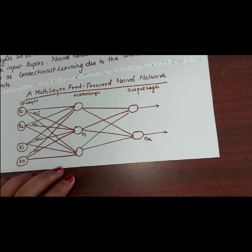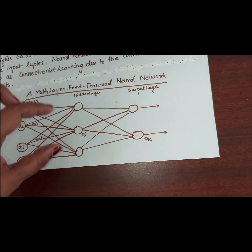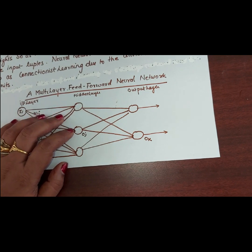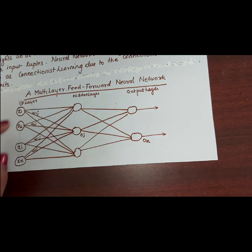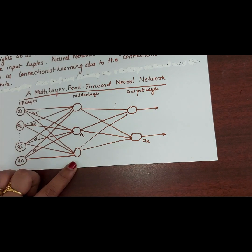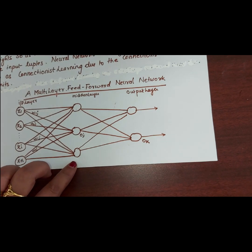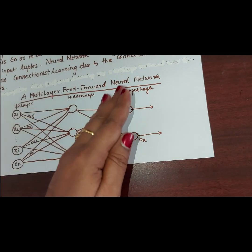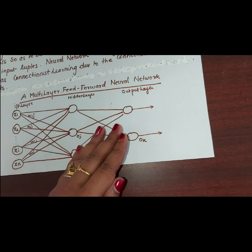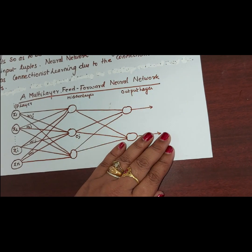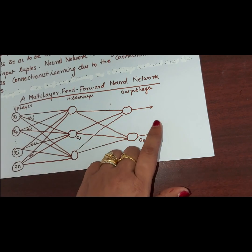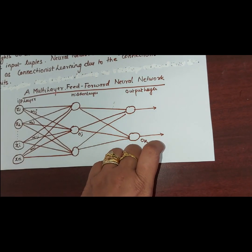The number of hidden layers is actually arbitrary. If a network consists of two hidden layers, it is called a three-layer neural network. Usually we use one hidden layer. The output of the last hidden layer is fed into the output layer, from which you will get the prediction of the given tuple.